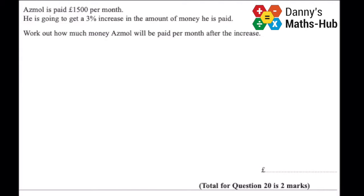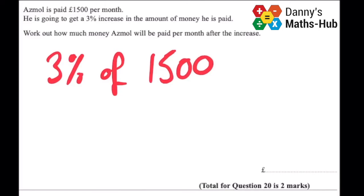What we want to do is work out what 3% of $1,500 is. Again, without a calculator, we can work out what 1% is by dividing by 100. So 1% if we divide it by 100 is 15. So 3% would be 3 lots of that, which is 45.